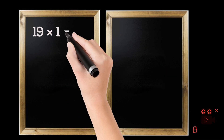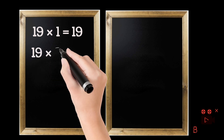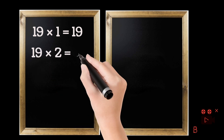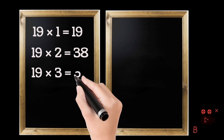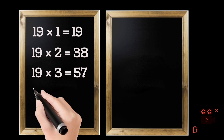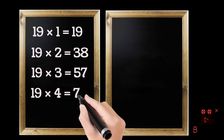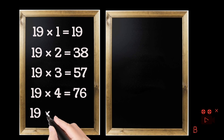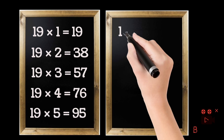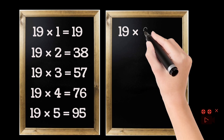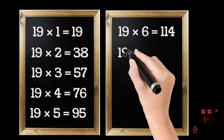19 ones are 19. 19 twos are 38. 19 threes are 57. 19 fours are 76. 19 fives are 95. 19 sixes are 114.